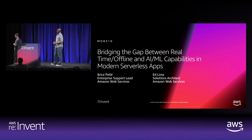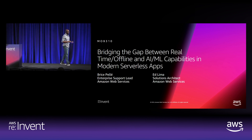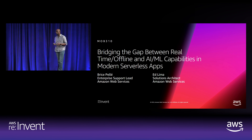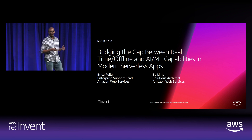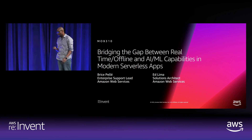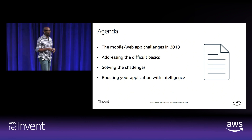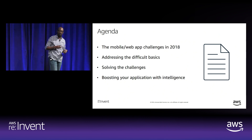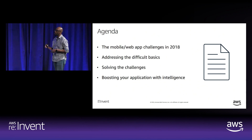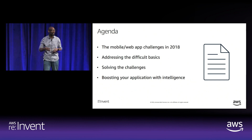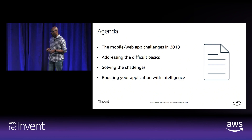Thank you for joining us today. This session is all about looking into how to build modern web applications. Specifically, what we want to talk about is how we can bridge the gap between real-time and offline features and AI and ML capabilities. To look into that, we first want to talk about the challenges that mobile and web applications face in 2018, then look at how to address some of the difficult basics, how to solve those challenges, and then how to boost our applications with intelligence.